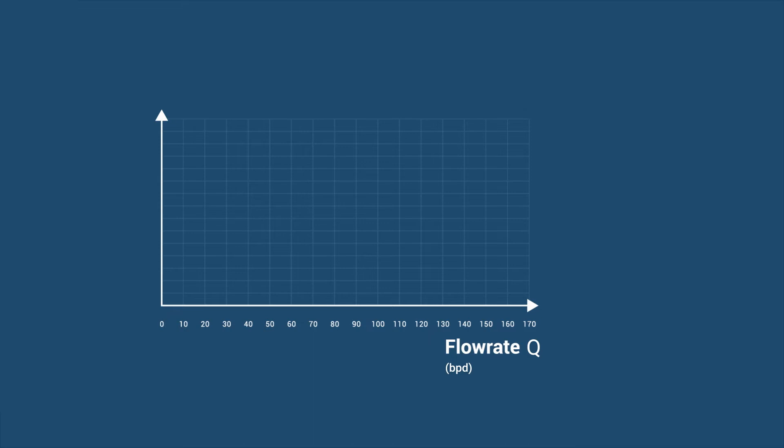The Y-axis is DP, the pressure drop, which in reservoir terms can mean pressure drawdown. The drawdown pressure is the force that causes the inflow of fluid into the well bore. This is measured in psi or pounds per square inch. Let's plot from 0 to 300 psi.